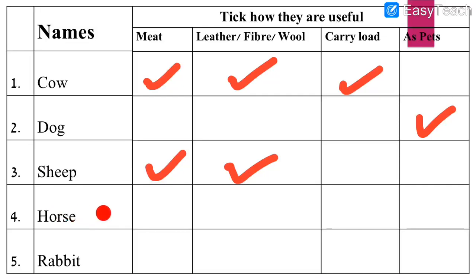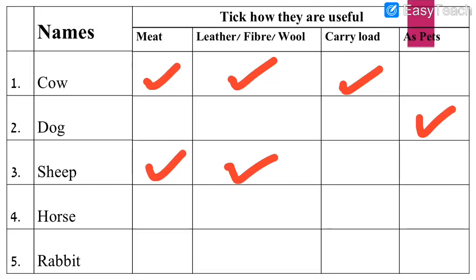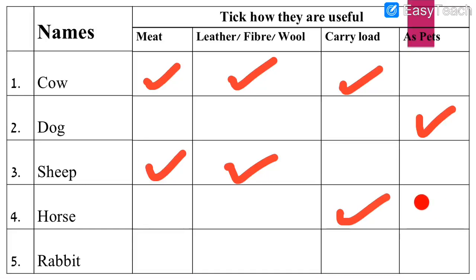Number 4: Horse. Can we get meat from horse? No, we cannot get meat from horse. Can we get leather, fiber, or wool from horse? No, we cannot. Can horse help us carry load from one place to another? Yes, of course it can carry load for us — that is the correct option. Can we keep horse as our pet animals? No, we cannot keep horse as our pet animals in the house.